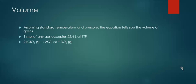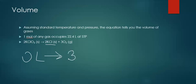Finally, we can look at volume. Assuming standard temperature and pressure, the equation tells you the volume of gases. At STP, one mole of any gas occupies 22.4 liters. Going back to this equation, we start with a solid, which essentially takes up no volume — so we start with zero liters. On the right side, KCl is also a solid, but oxygen is a gas. We have three moles of oxygen, so that's three times 22.4 liters — a large volume because gases expand to fill their container.